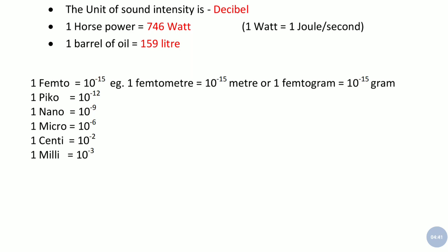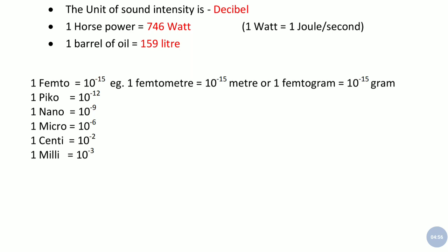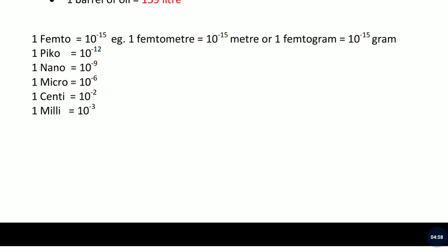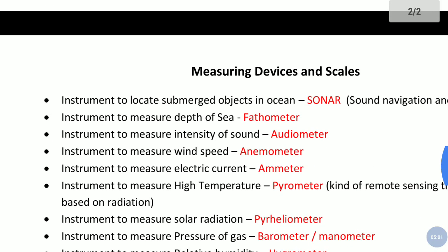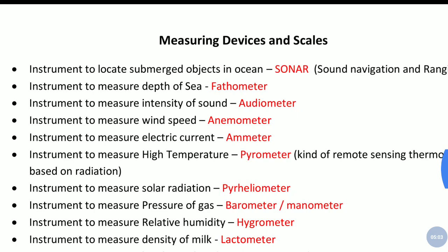One nanogram equals 10 to the power minus 9 gram. You must remember these units, it is frequently asked.